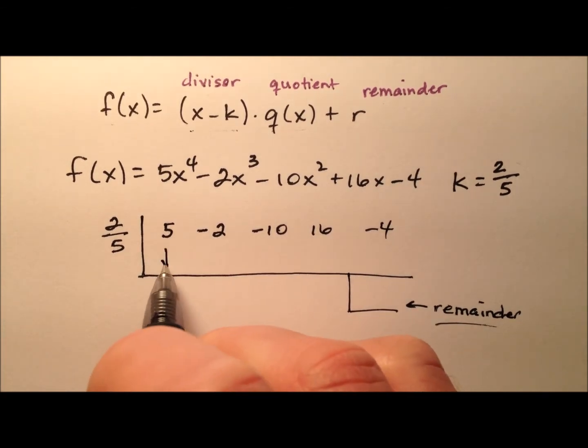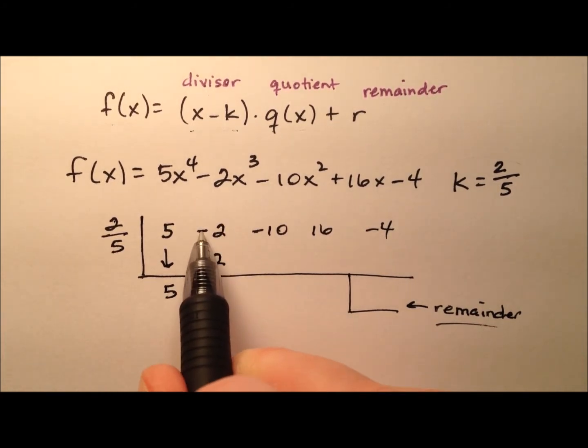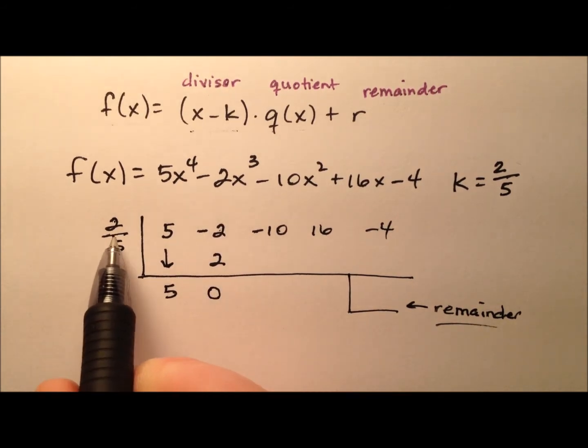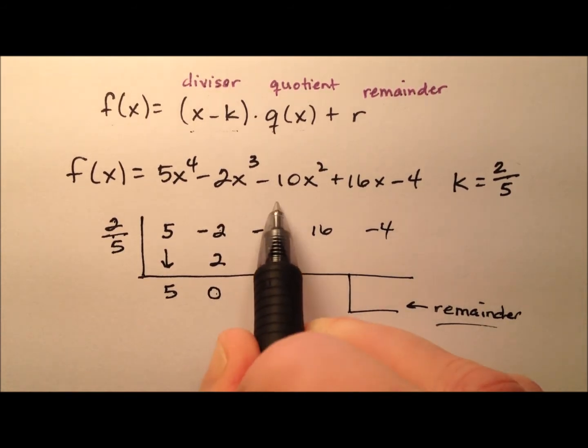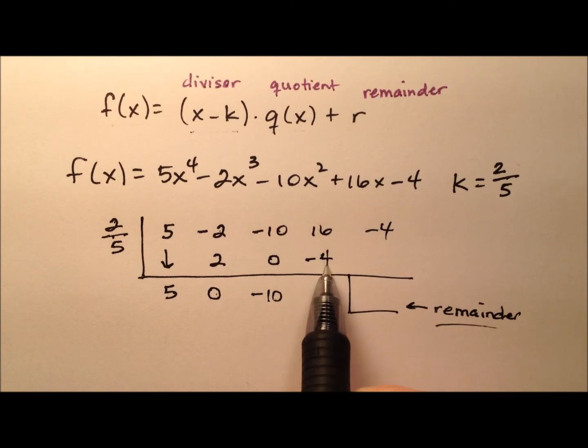For synthetic, bring down this first guy, and we have 5. So 2/5 times 5 is positive 2. -2 plus 2, we'll add this column, gives us 0. 2/5 times 0 is 0. When I add that column I have -10. 2/5 times -10 will be -4. When I add this column I have 12.